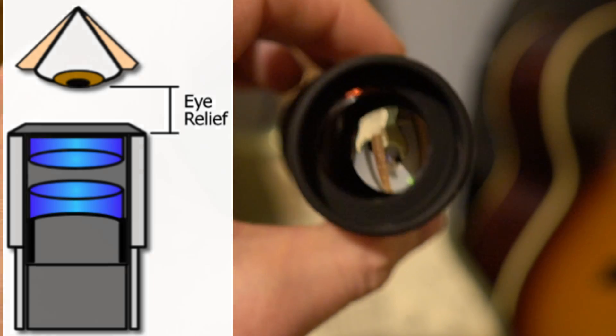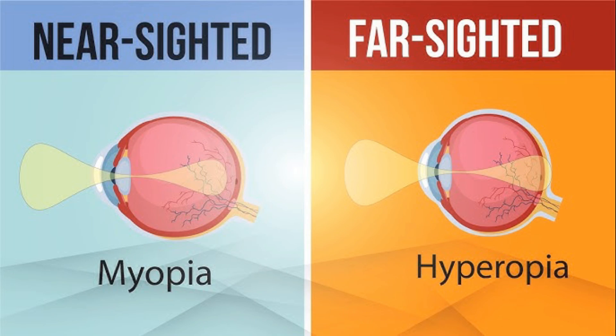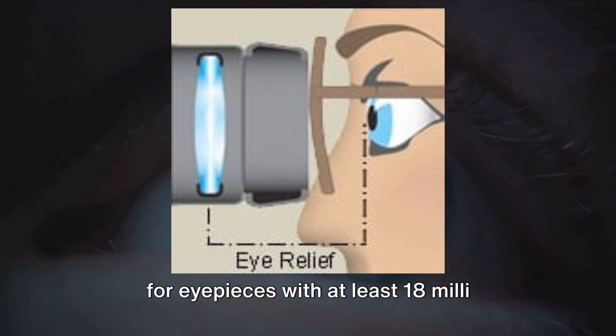A telescope will correct for both short and long sightedness. However, if you suffer from astigmatism, you may need to wear glasses to observe, in which case look for eyepieces with at least 18 millimeters of eye relief.